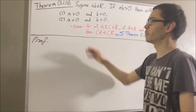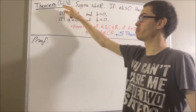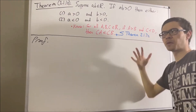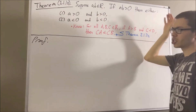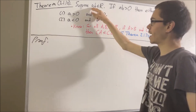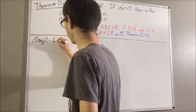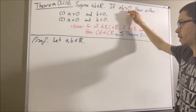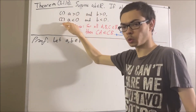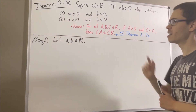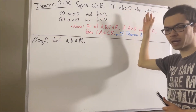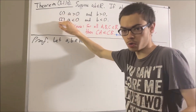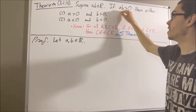Just so you're aware, I'm giving a different proof to theorem 2.1.10 than the one given in the book. Now let's get into proving this theorem. To start out the proof, let's suppose A and B are real numbers. Our whole goal is to prove if AB is greater than zero, then either one or two is true. To prove this, we're actually going to prove the contrapositive — that is, we're going to prove if both one and two are not true, then AB greater than zero is not true.